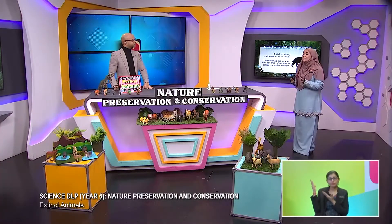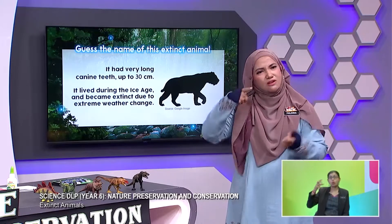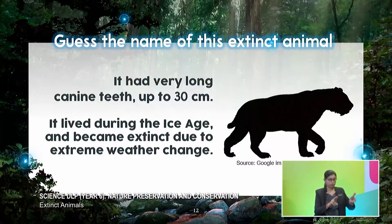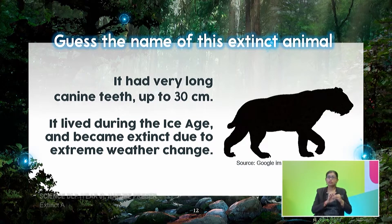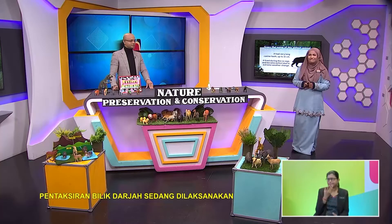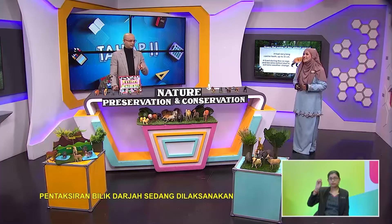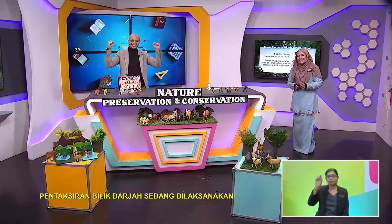This one had very long canine teeth — up to 30 centimeters. That's pretty long, yeah? Just like your long ruler. It lived during the Ice Age, just like the mammoth, and became extinct due to extreme weather change. What is the name of this animal? It looks like a tiger and it has long canine teeth, so if I'm not mistaken, this is the saber-toothed tiger. Yes, you are right, Abang Sean — saber-toothed tiger.